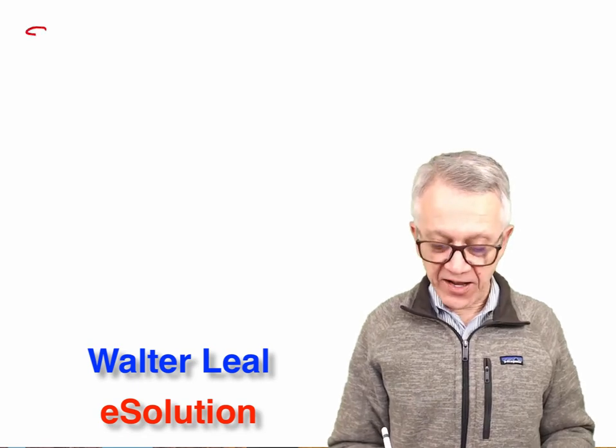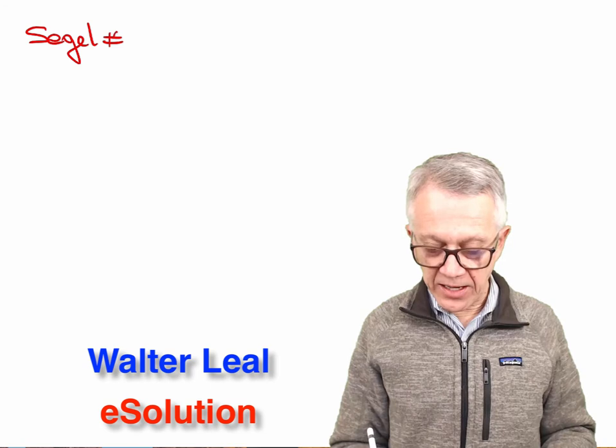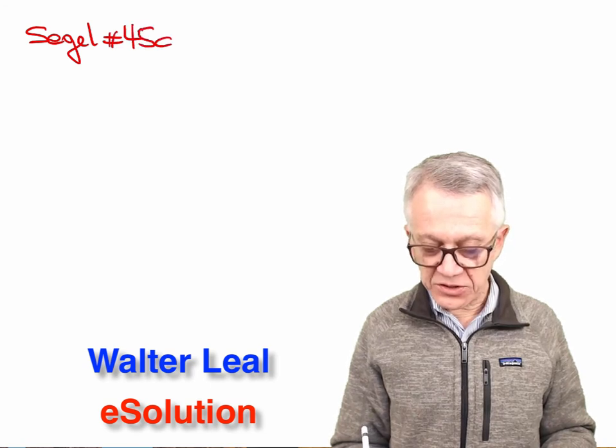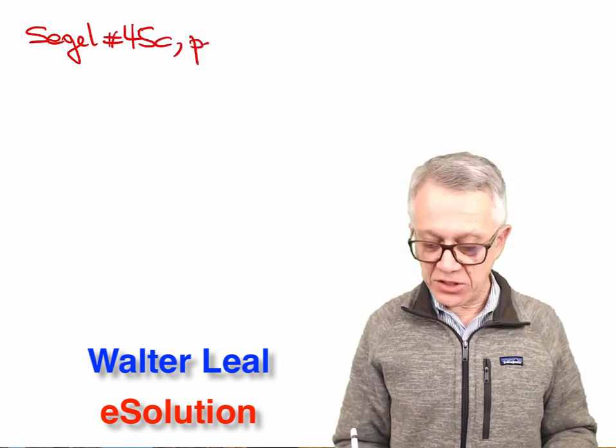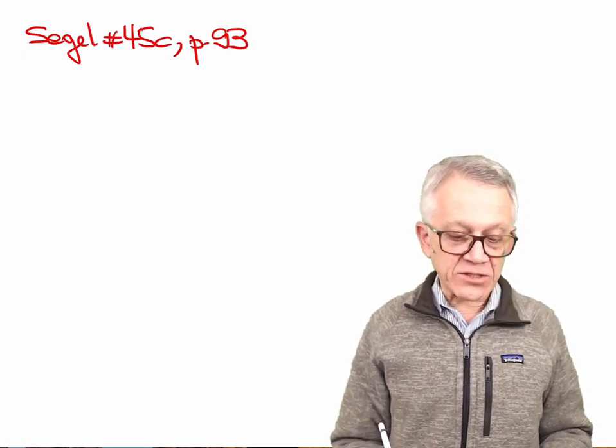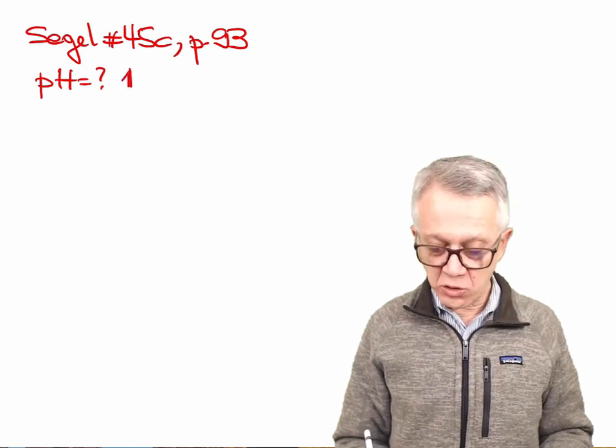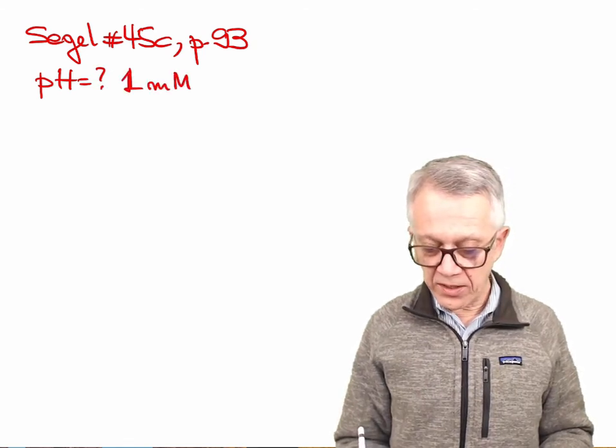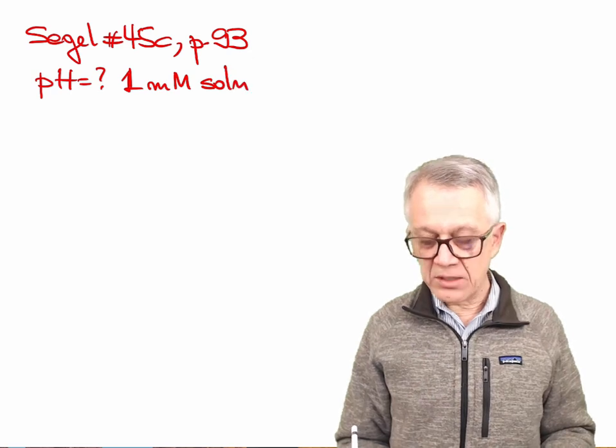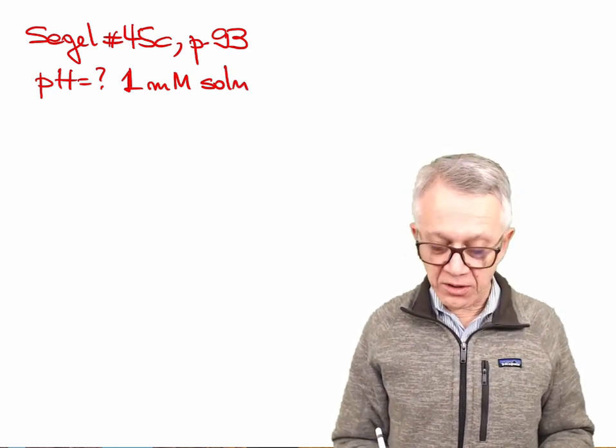Let's continue with part C of problem 45. This is the problem we find in Seagel, it's 45C on page 93. This particular problem asks for the pH of a one millimolar solution, and this time the solution is a sodium salt of alanine.